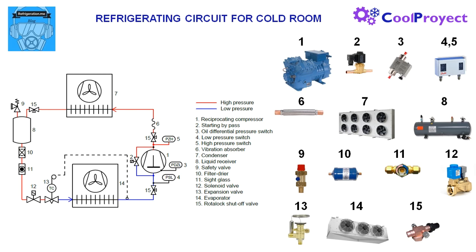In number 4 and 5 we have the low pressure switch and the high pressure switch. They are both normally combined in a single device. The high pressure switch is used as a safety device, and the low pressure switch is used as a control device to stop the compressor when the liquid solenoid valve closes due to an order from the thermostat — this is called the pumpdown operation. In number 6 we have the vibration absorber, normally placed in the discharge line to reduce noise and vibration generated by the compressor. With this device we have less probability of broken connections and refrigerant leaks.